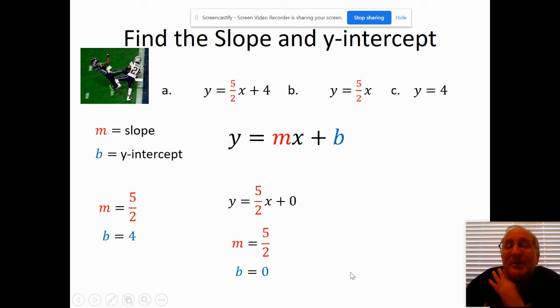The same thing is kind of true over here. We have y equals 4. Well, I might want to rewrite it as 0x plus 4. That just makes it easier to see if the slope is 0 and the y-intercept is 4.